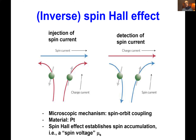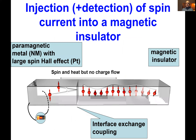I'll just take the spin Hall effect as given. Most importantly it leads to the establishment of a spin accumulation, and you can use the spin Hall effect to inject spin current into a magnetic insulator, or to detect spin current coming out of a magnetic insulator.